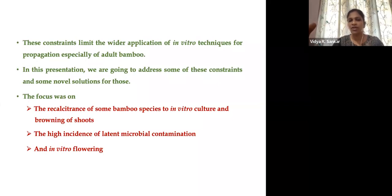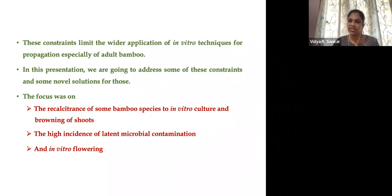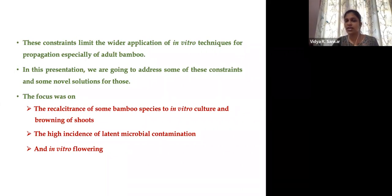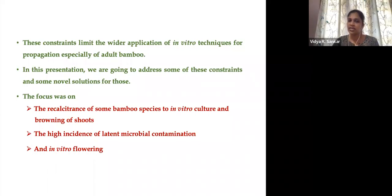These constraints reduce the wider application and reduce the potential of in vitro propagation, especially in recalcitrant species. In this talk, we are focusing on the comparison of two species: one is recalcitrant and the other is easy to propagate. We also discuss some issues found during multiplication, the incidence of latent contamination, some protocols we developed to control this contamination, as well as in vitro flowering.